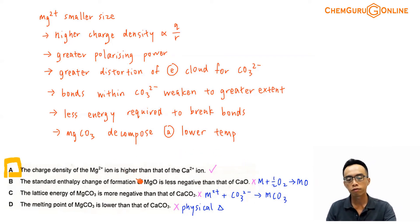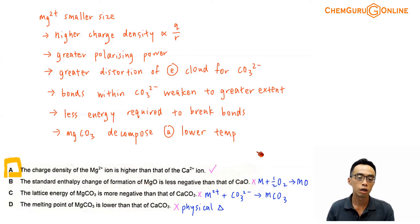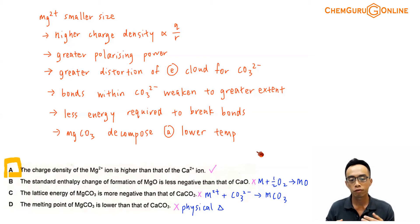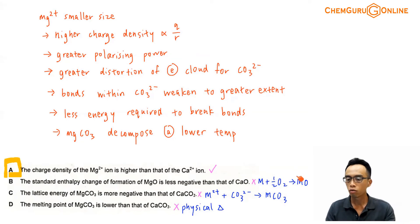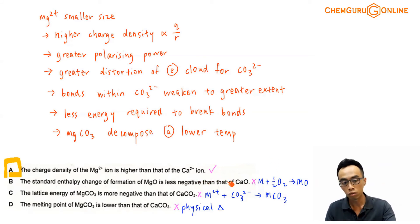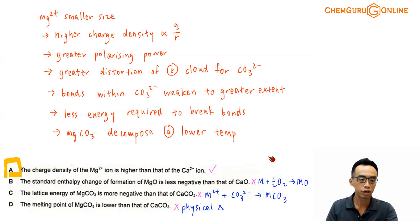For option B: the standard enthalpy change of formation of magnesium oxide is less negative than that of calcium oxide. If I consider enthalpy change of formation, which involves forming a compound from elements in their standard state, the equation is: metal plus half O2 gives metal oxide. This process has nothing to do with the decomposition of magnesium carbonate. So even if it is true, it is not relevant, and option B is eliminated.